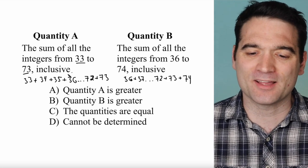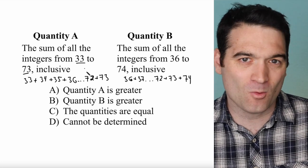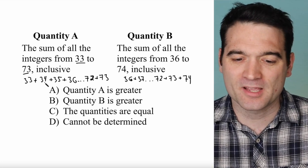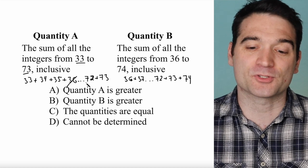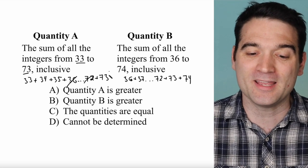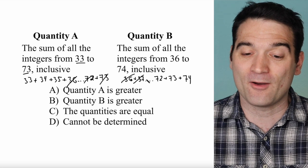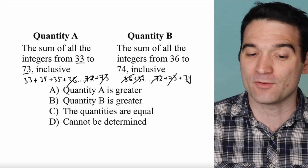What we can do is just cancel out the terms that appear in both quantities. For instance, the numbers 36 through 73 appear in both of them. So I'm just going to cross out all of these. What am I left with over here?